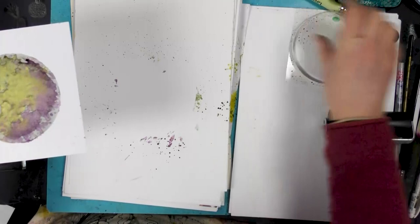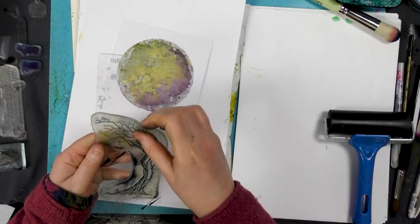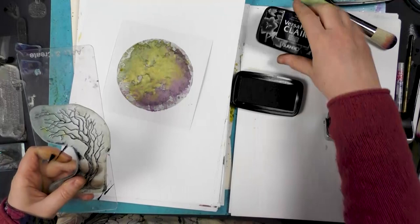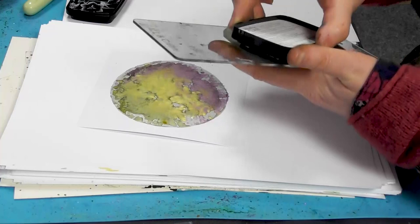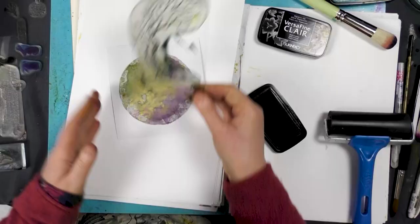I'm going to trim that down. We've got one of our new trees here, and I'm going to ink this up in Nocturne. I'm going to pop that along the edge.